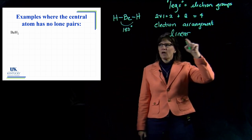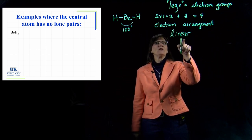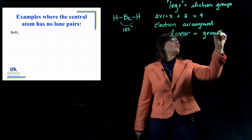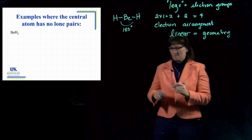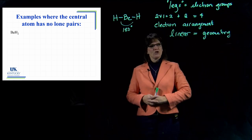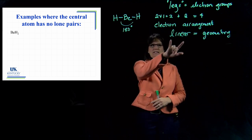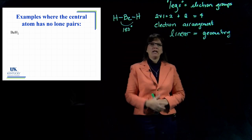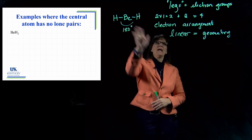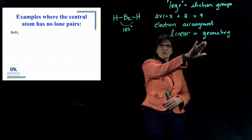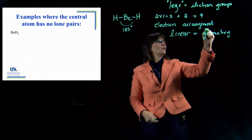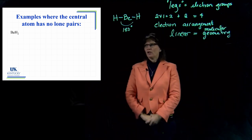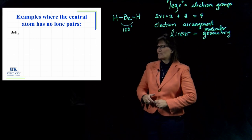Since there are no lone pairs in BeH₂, the electron arrangement name — linear — is also the name of the geometry. Questions might ask: what is the electron arrangement? Linear. What's the bond angle? 180 degrees. What is the molecular geometry? Also linear. That's the first example.